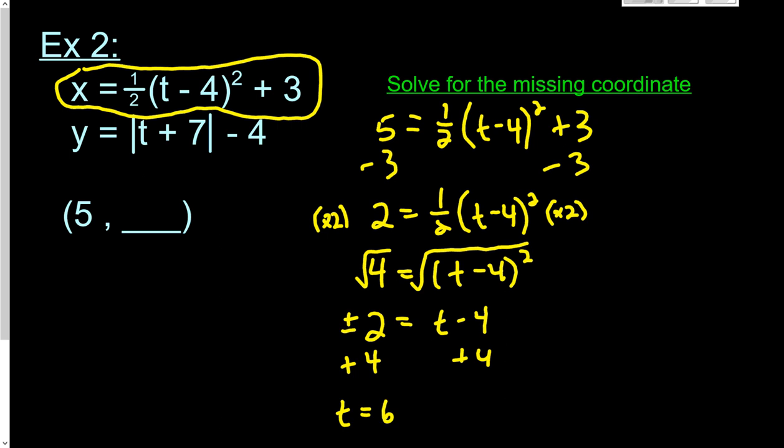But if we're dealing with negative 2, negative 2 plus 4 is 2. So at time 2, the x value is also 5. So there's 2 different times when x equals 5.